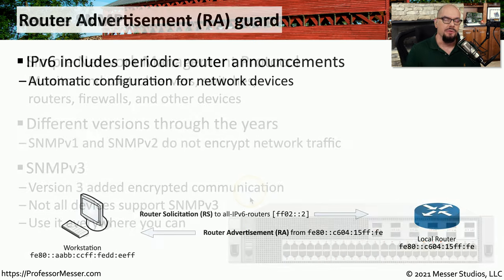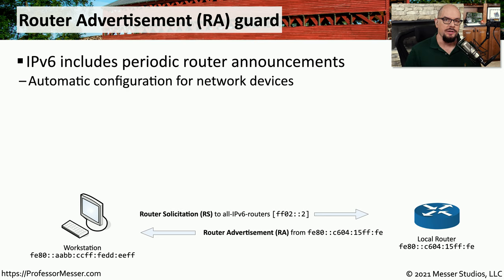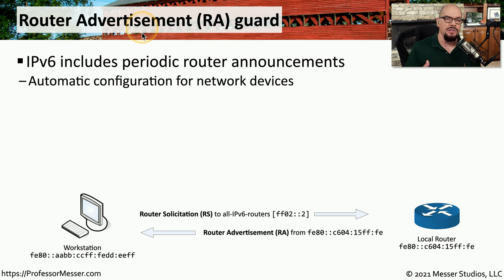Another useful network hardening technique is to protect your IP version 6 router advertisements. We do this by using something called router advertisement guard, or RA guard.